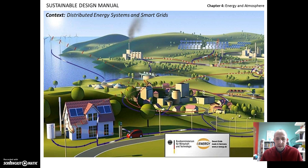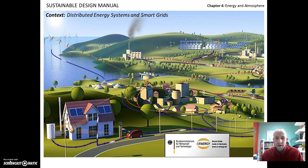Those signals can go all the way back to the power company, and the power company can look at communities as a whole. They get all this data, and computers can read usage data and calibrate how much power they're generating to what's actually being used. So with a more efficient electrified system, we can use our power more efficiently.